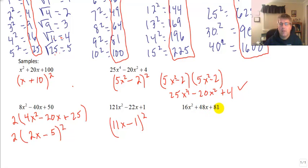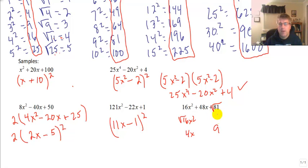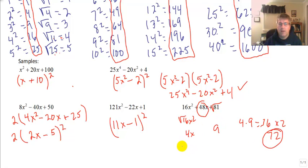Sample problem 5: 16x squared plus 48x plus 81. The square root of 16x squared is 4x, and the square root of 81 is 9 — both perfect squares at first and last terms. But checking the middle term: 4 times 9 is 36, and 36 times 2 is 72. Our middle term is 48, not 72. So this is not a perfect square trinomial — it may be factorable by other methods, but it definitely does not follow the perfect square trinomial pattern.